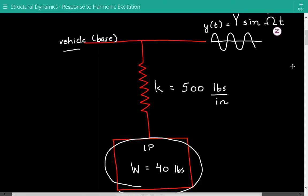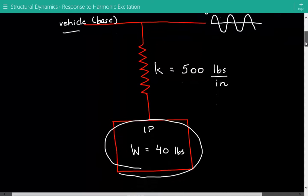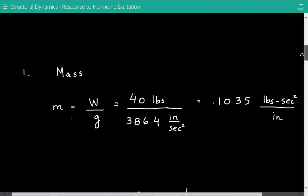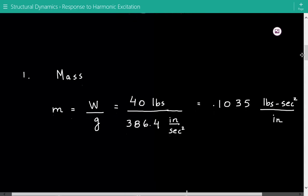Coming back to our dynamics problem, the first thing we're going to do is calculate the mass of the instrument panel. That's equal to the weight divided by the gravitational acceleration, so it's equal to 0.1035 pounds second squared per inch.